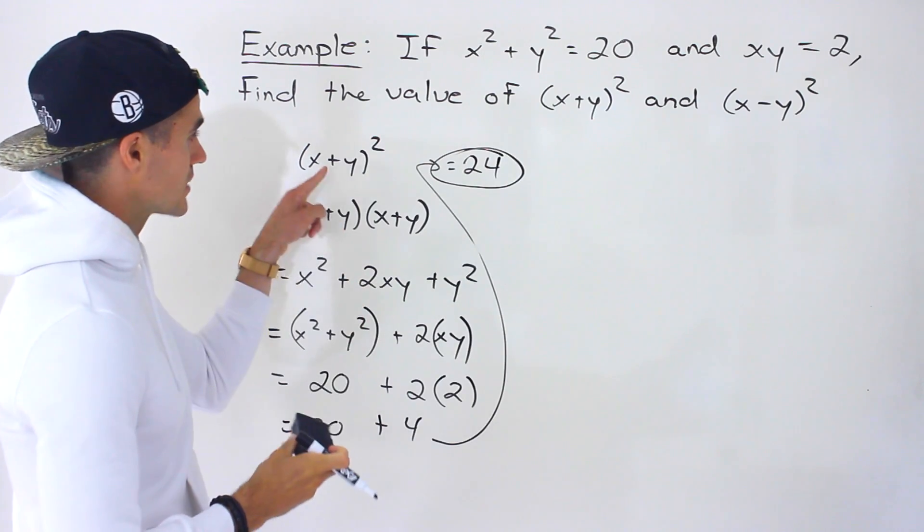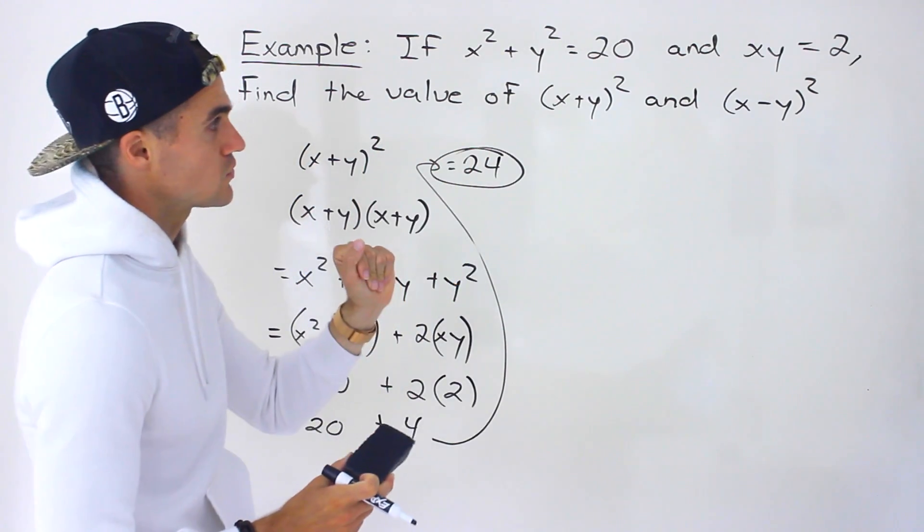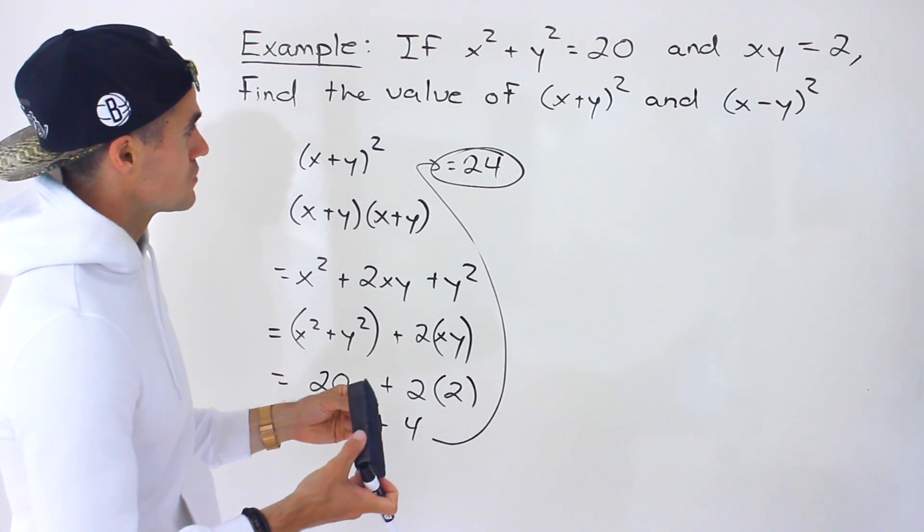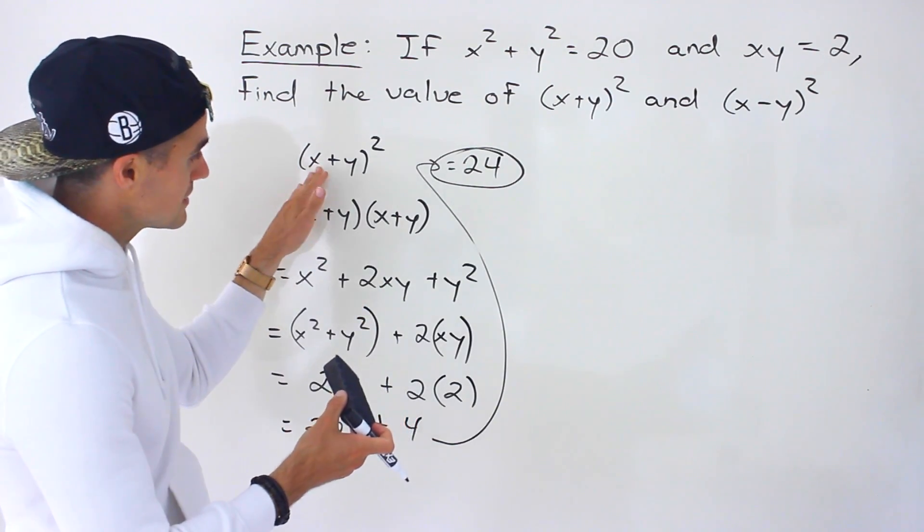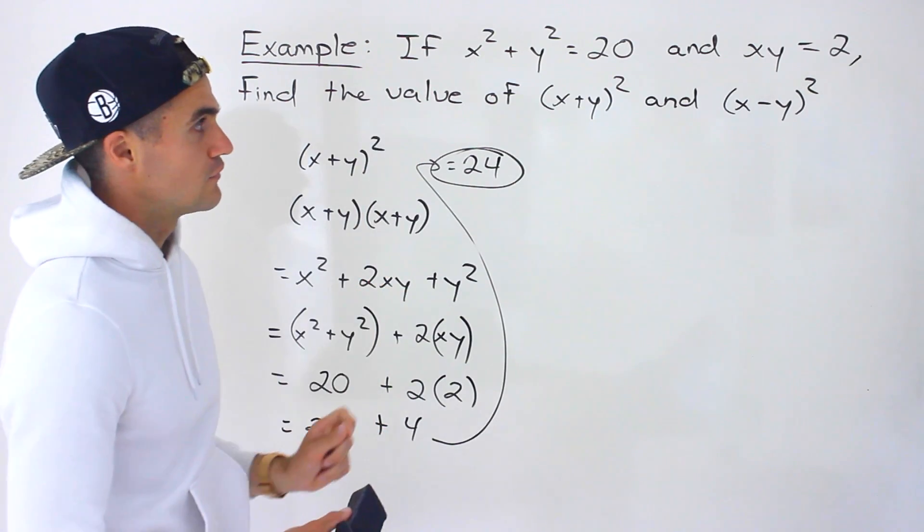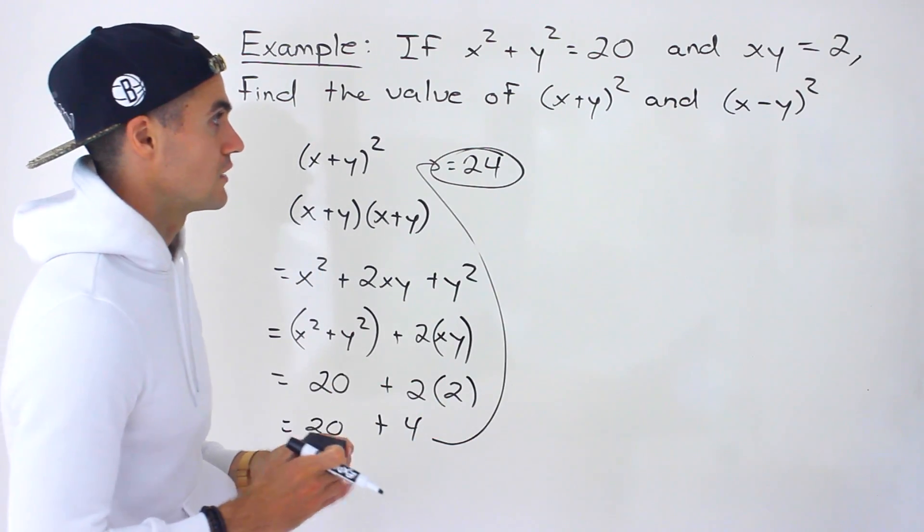So that's what (x+y)² equals if x² + y² = 20 and xy = 2. The trick is to recognize that you have to expand this, and then in that expanded form, you can plug in values for the expressions you were originally given.